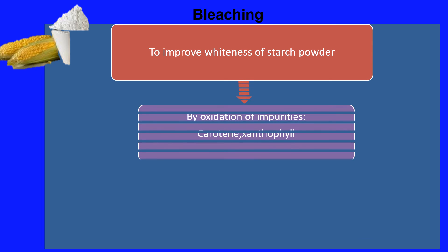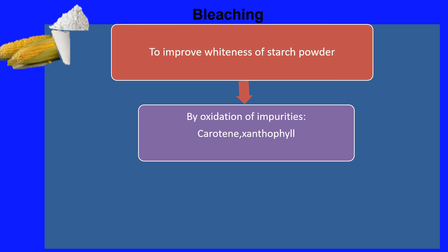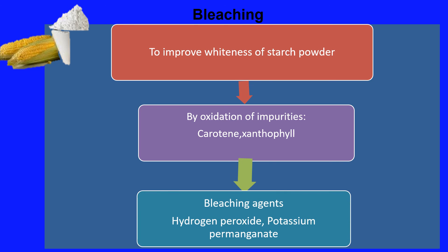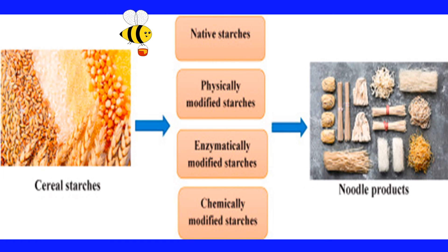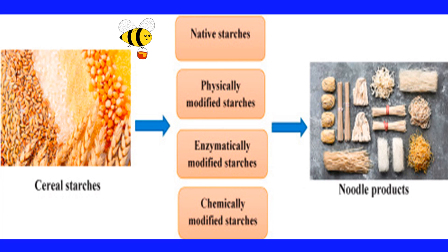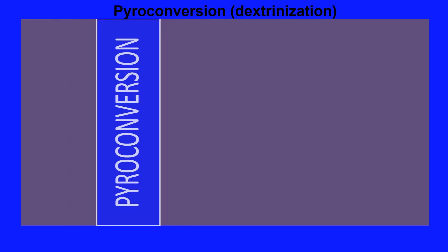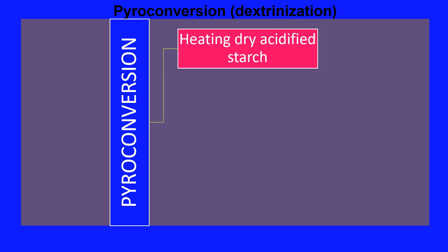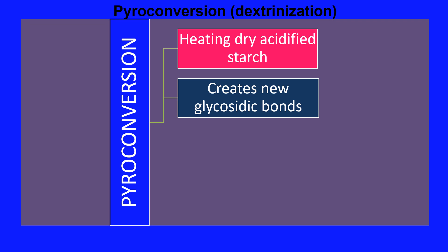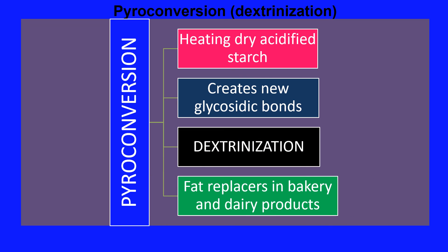Bleaching is done to improve the whiteness and appearance of starch powder by oxidation of impurities, using bleaching agents like hydrogen peroxide and potassium permanganate. Pyroconversion or dextrinization is a process in which pyrodextrins are formed by heating dry, acidified starch, creating new glycosidic bonds. The resulting pyrodextrins are used as fat replacers in bakery and dairy products.